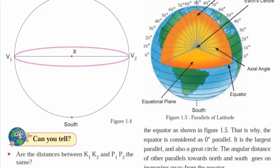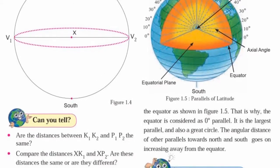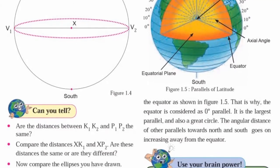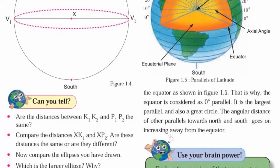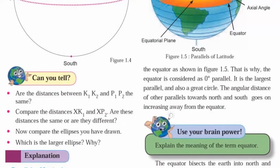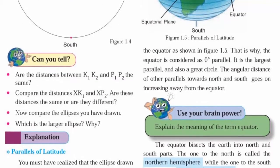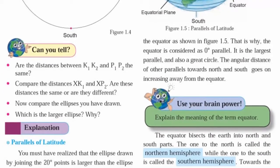Equator, Northern Hemisphere, Southern Hemisphere, North Pole and South Pole. The equator is considered as a zero-degree parallel. It is the largest parallel and also known as a great circle. The equator bisects the earth into north and south parts.